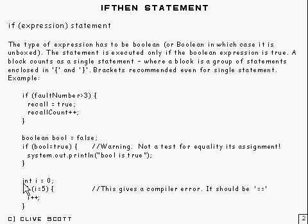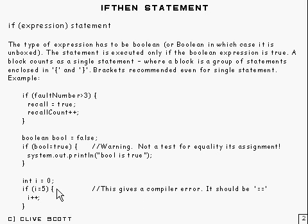Here's an example that will give a compiler error, because instead of testing whether i equals 5, it's setting i to 5. The value of such an assignment is an integer, not a boolean, so that gives a compiler error. This can sometimes catch people out in C and C++, because that is allowed as a construct there. But with Java, booleans are not numeric types, so that's not a problem.